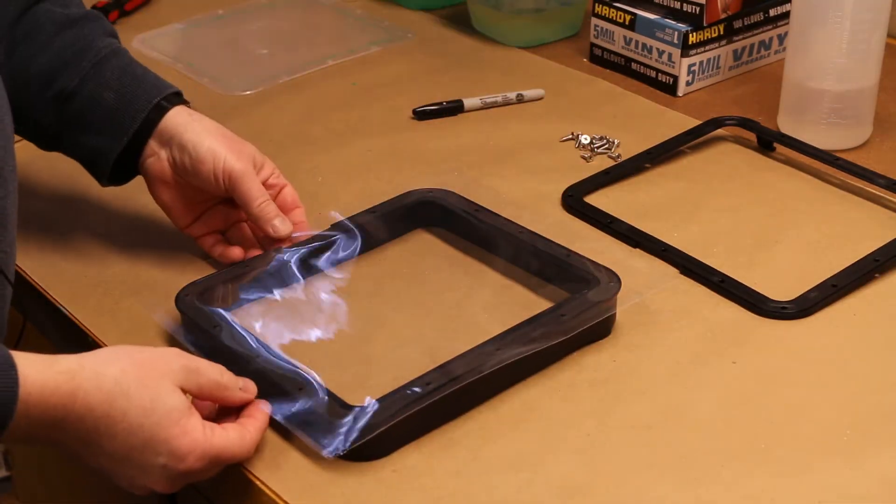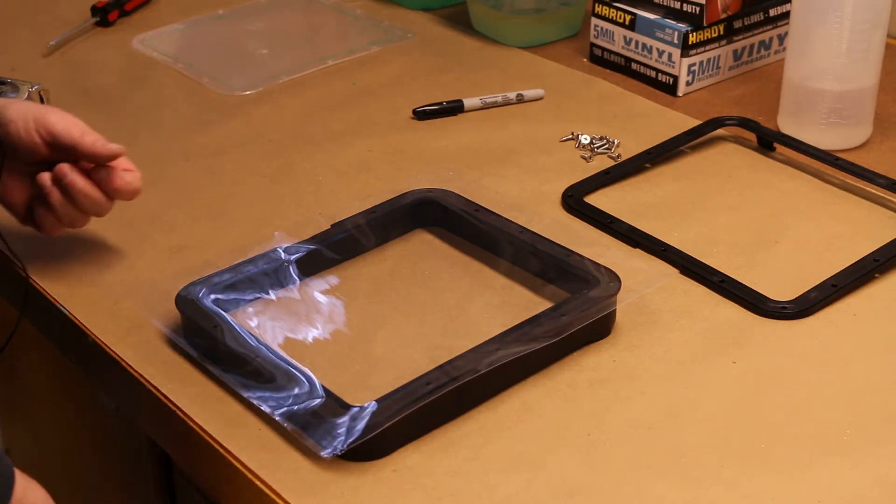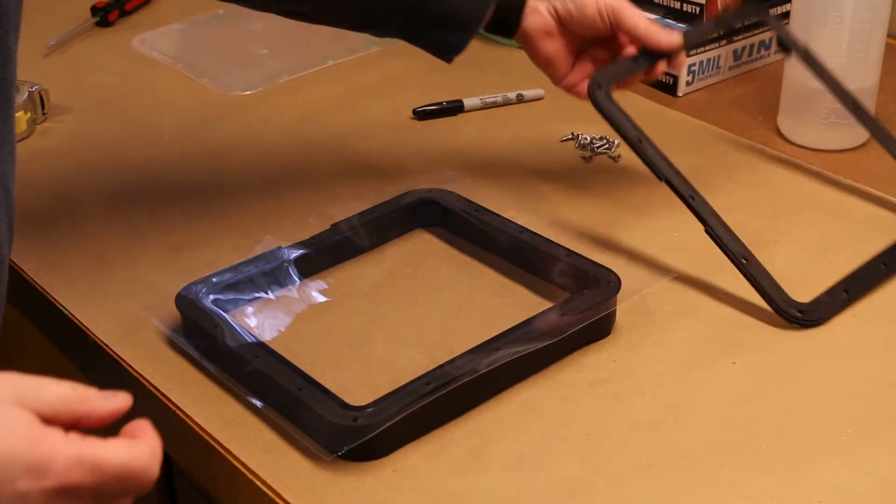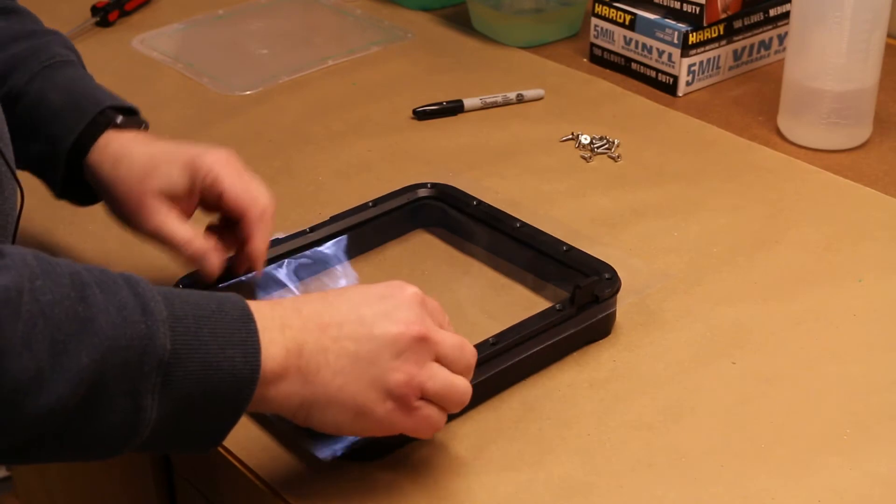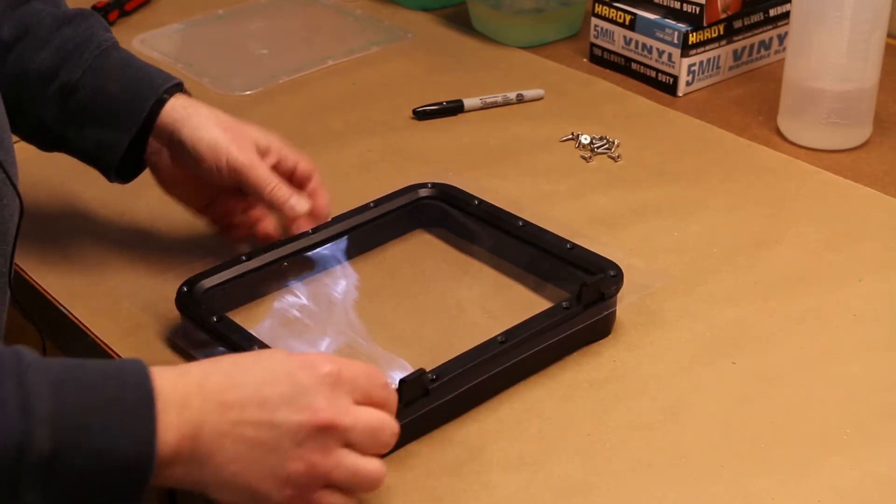Then you lay the film over the vat, making sure you have a good amount of overhang on all four sides. Also remember to put that foam gasket back in before you do this.